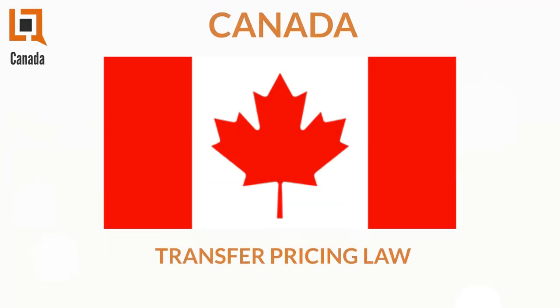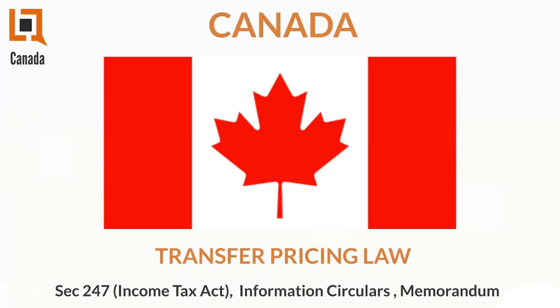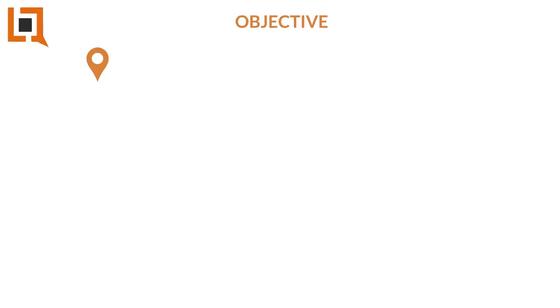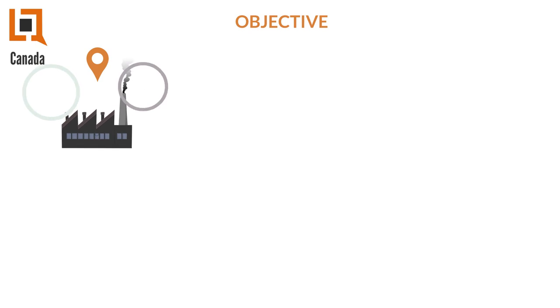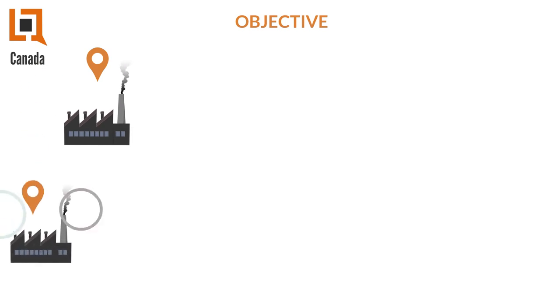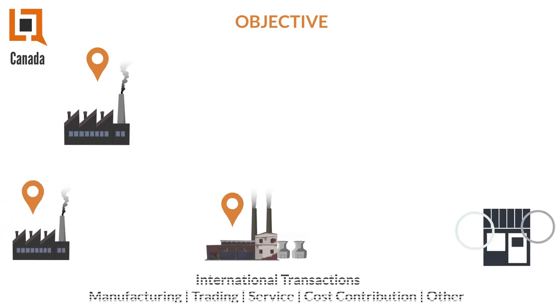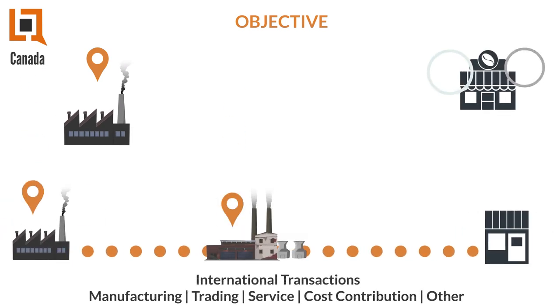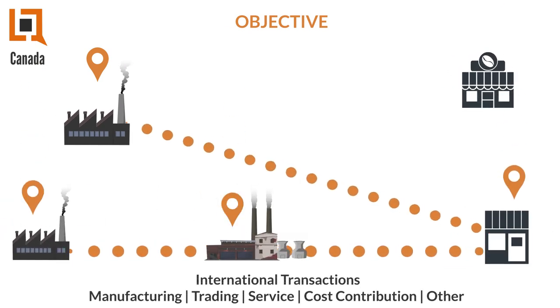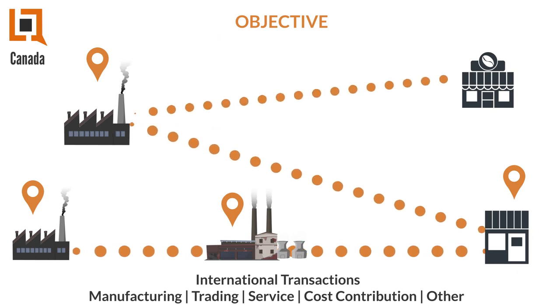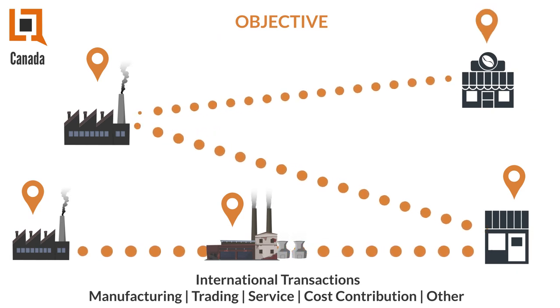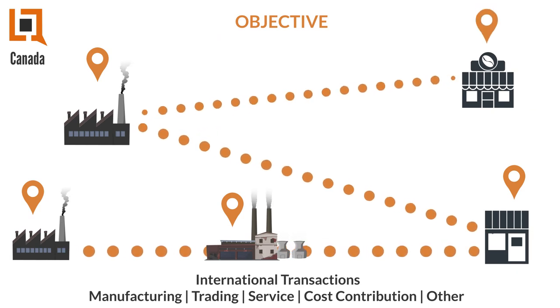Transfer pricing law was introduced in Canada in the year 1998. The objective is to ensure that international transactions between related companies take place at a price as if the transaction was taking place between unrelated parties.